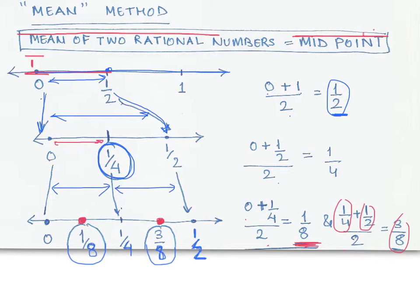In fact you can keep on going on till infinity to find out the midpoint between any two given points on a number line, and that kind of explains the mean method to find out a rational number between any two given rational numbers.